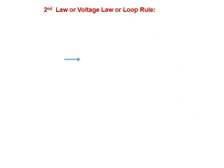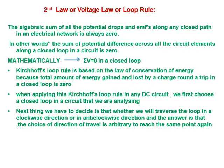Kirchhoff's second law, also called the voltage law or loop law: around any closed loop of a network, the algebraic sum of changes in potential must be zero. In other words, the algebraic sum of EMFs in any loop of a circuit is equal to the sum of the products of current and resistances in it. Mathematically, summation of ΔV equals zero. Kirchhoff's loop rule is based on conservation of energy, because the total energy gained and lost by a charge around a closed loop is zero.